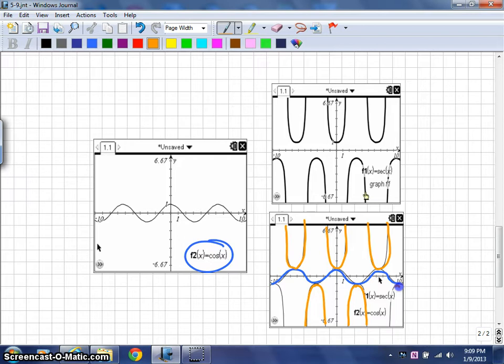The only other thing that you want to make sure that you note when you're doing these types of graphs is that there are asymptotes wherever the cosine graph crosses the x-axis. So if you think about an x-axis or an x-intercept, the value there will be zero. And so when you do the reciprocal of that, you'll be dividing by zero.